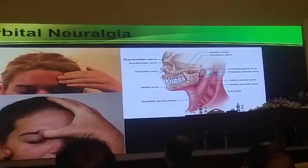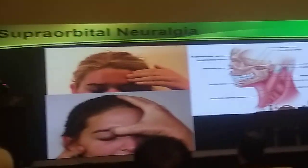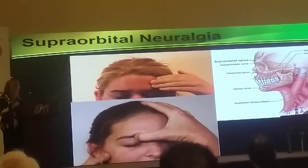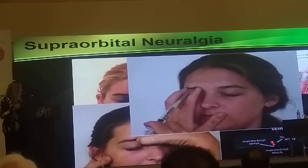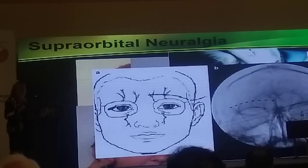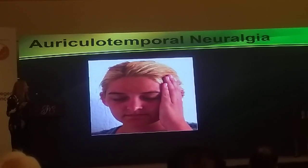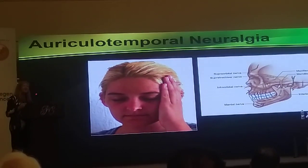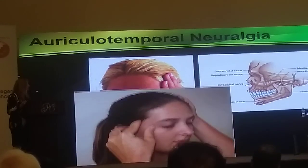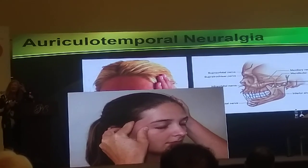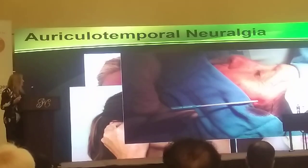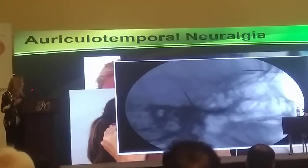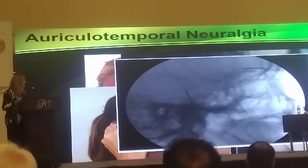The supraorbital nerve is the first branch of the trigeminal nerve. Physical exam is performed over the top of the eye at the supraorbital notch, and it can be visualized under ultrasound. Treatments include landmark-guided injection, cryo-neuroablation, and peripheral nerve stimulation. The auriculotemporal nerve is in the temple area — third division of the trigeminal nerve. Physical exam involves making an equilateral triangle with the fingers, followed by landmark-guided injection, cryo-neuroablation, and peripheral nerve stimulation.